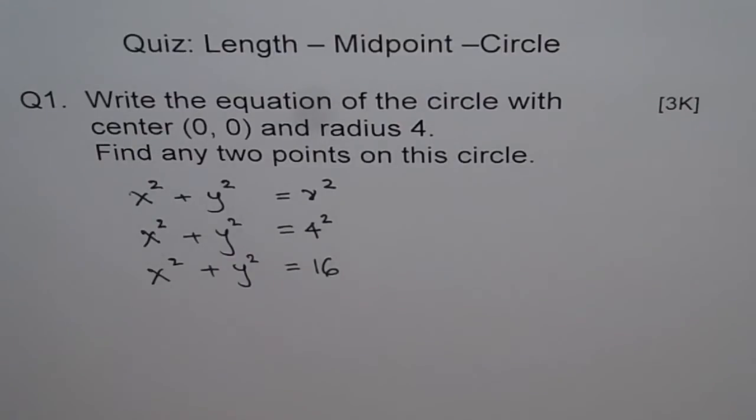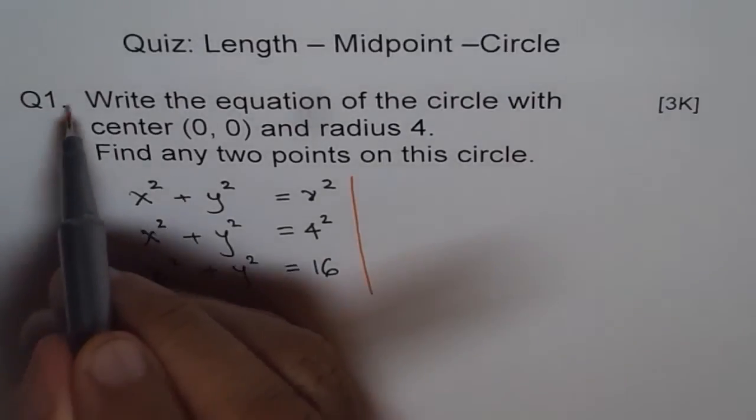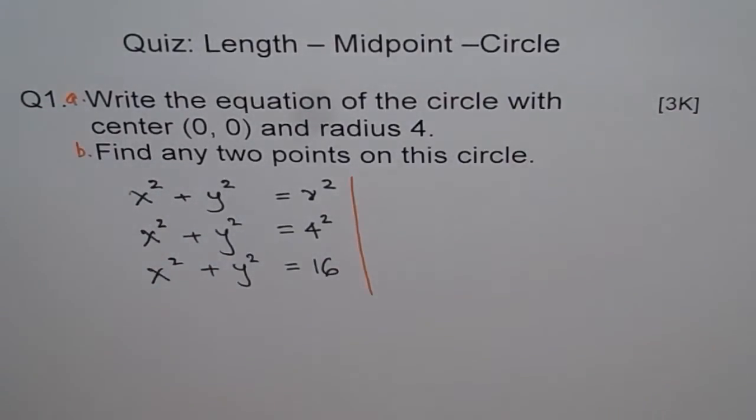Now for part B, finding two points. I should clearly write A and B so students don't miss part B. The best approach is to plug in x as 0 or y as 0 and find the other coordinate. Let's say x is 0.